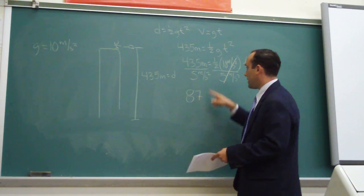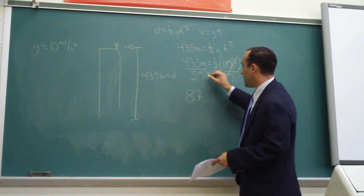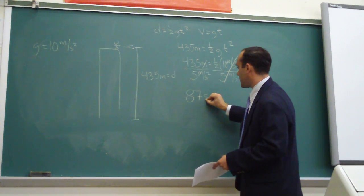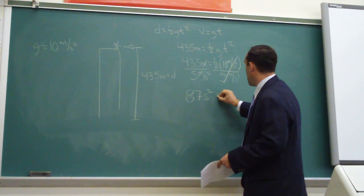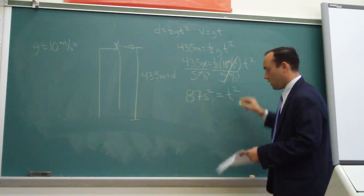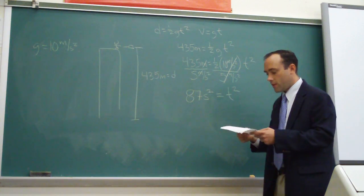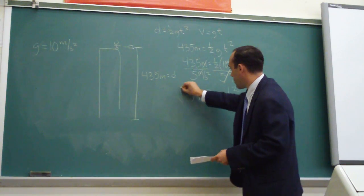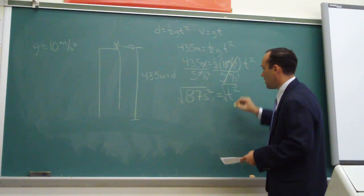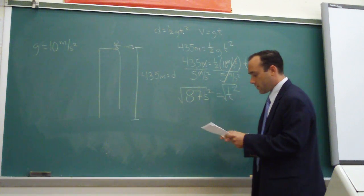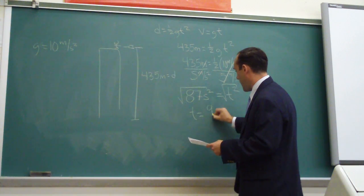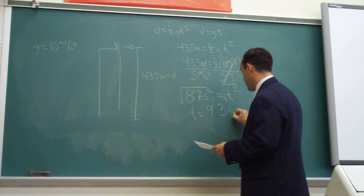Following dimensional analysis and taking care of the units, you cross meters out with meters, and you're left with seconds squared equal to t squared. The final step is to take the square root of both sides, and you're left with the time equaling 9.3 seconds.